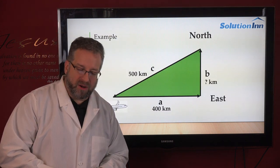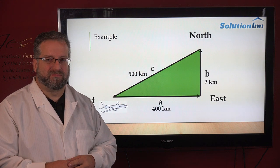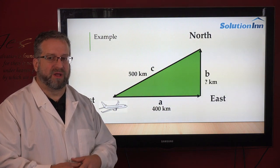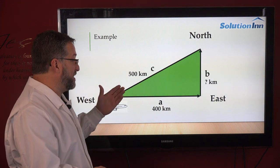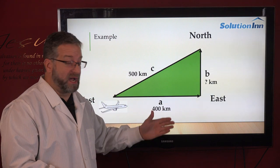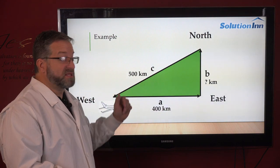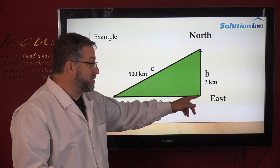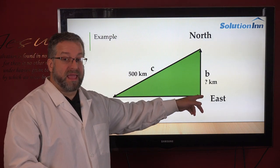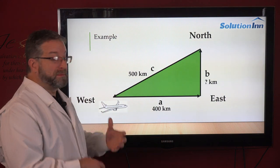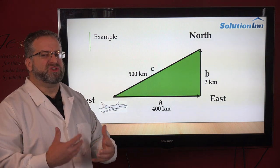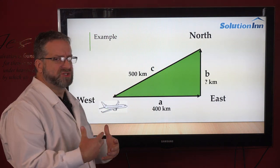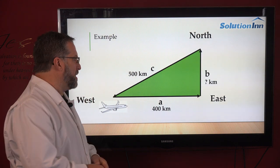So how do we use this? We know what the sides are now. A and b are the shorter of the three sides, c is the hypotenuse, and a and b when they intersect make the 90 degree angle. Let's apply this and use it to solve for something we don't know.